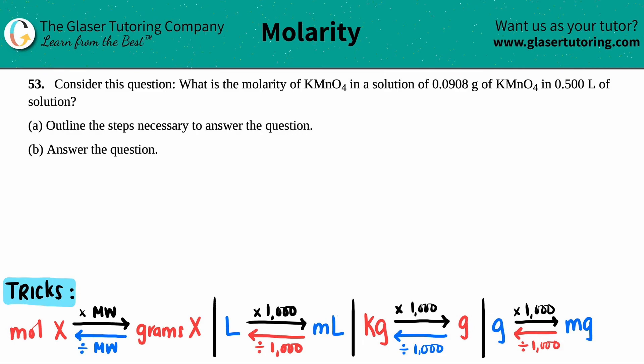Number 53, consider this question. What is the molarity of potassium permanganate (KMnO4) in a solution of 0.0908 grams of potassium permanganate in 0.5 liters of solution? So part A, we have to outline the steps necessary to answer the question, and then in letter B, we have to answer the question.